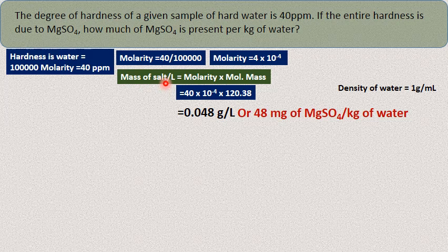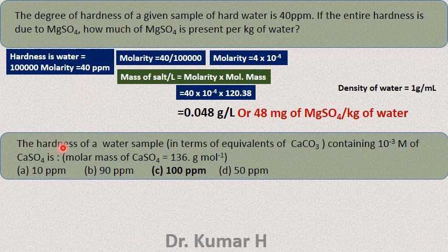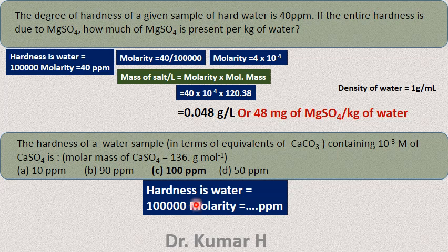Remember: mass of salt present per litre = molarity × molecular mass. That is another important formula. Now let us verify the shortcut formula with another question: the hardness of a water sample in terms of calcium carbonate equivalents containing 10⁻³ moles of calcium sulphate is how much? The molar mass of calcium sulphate is 136 g/mol — but that is not required here. Using hardness = 1 lakh × molarity: 10⁵ × 10⁻³ = 10² = 100 ppm.